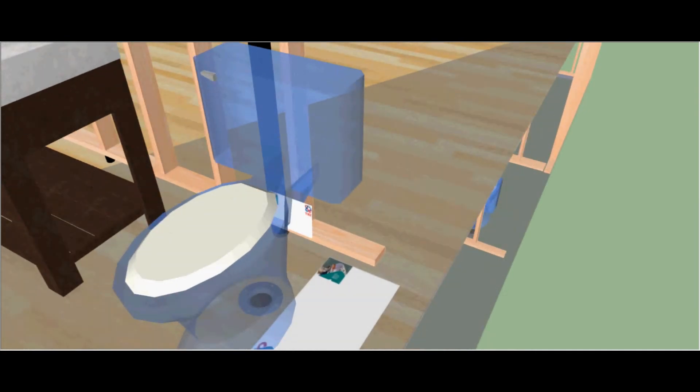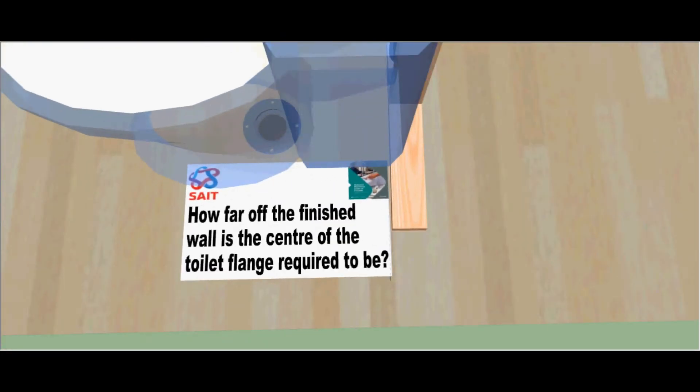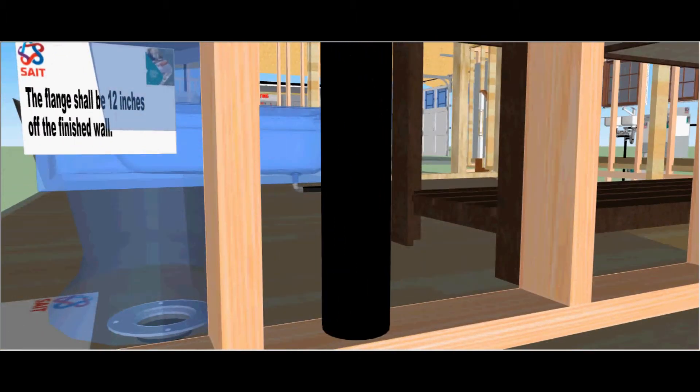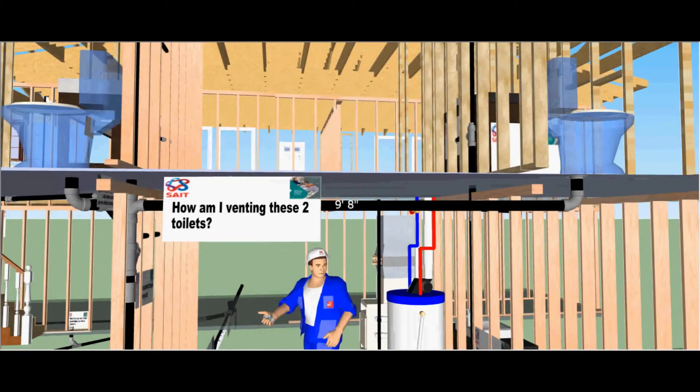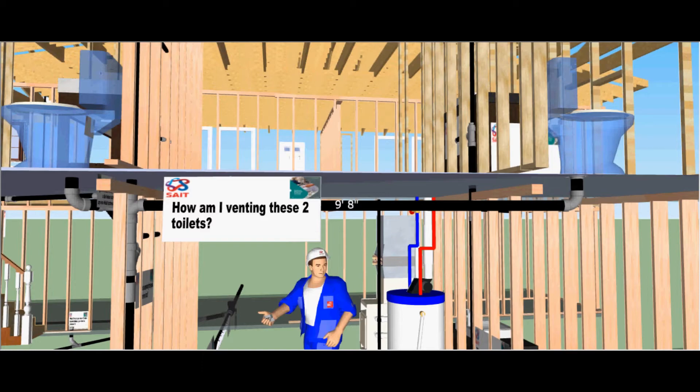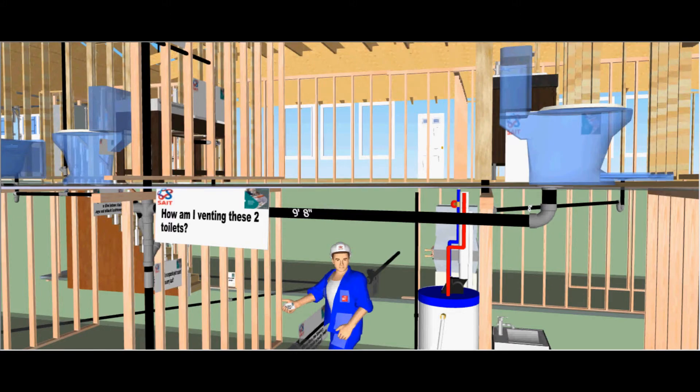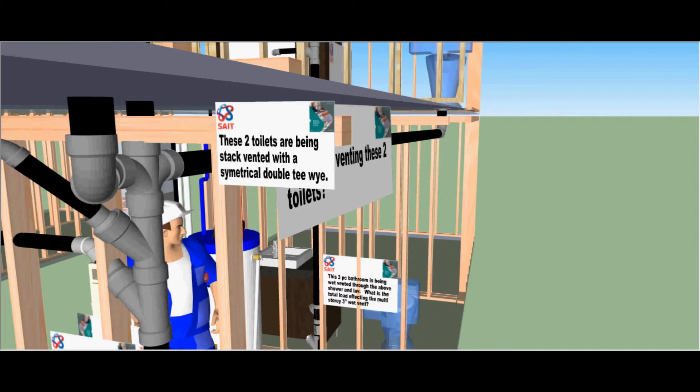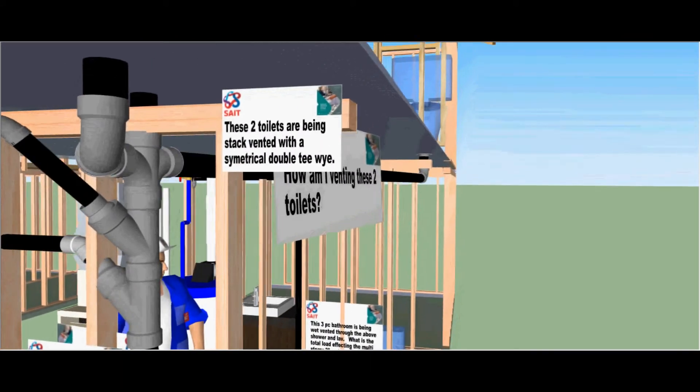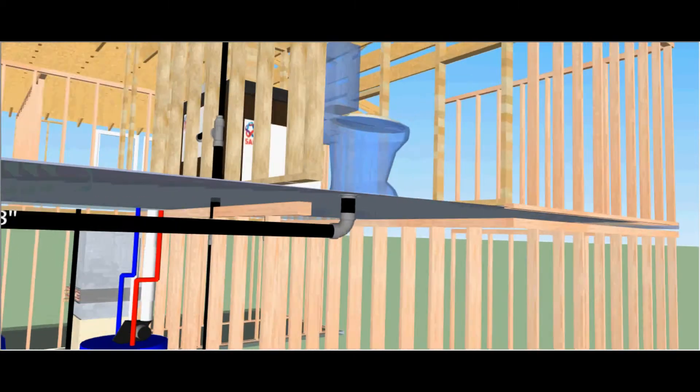Let's take a look at the toilet. When roughing in a toilet, how far off the finished wall is the centre of the toilet flange required to be? The flange shall be at least or shall be 12 inches off a finished wall, not the rough one. How am I venting these two toilets? Notice that they are 9 foot 8 inches apart or away from the main stack. These two toilets are being stack vented with a symmetrical double TY as I can run them up to 3 meters horizontally and 1 meter vertically.